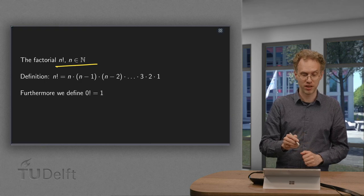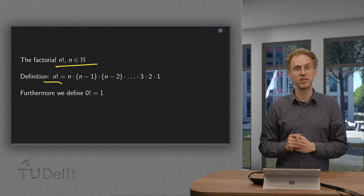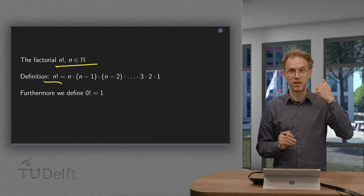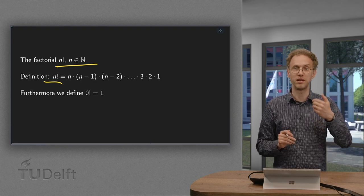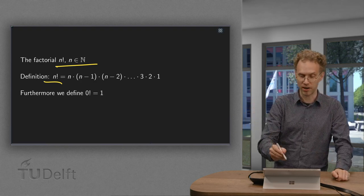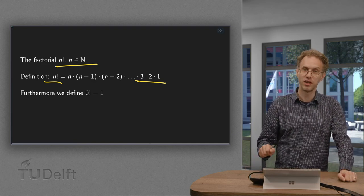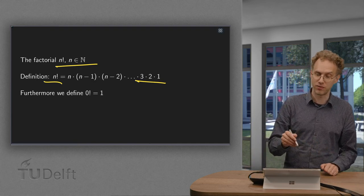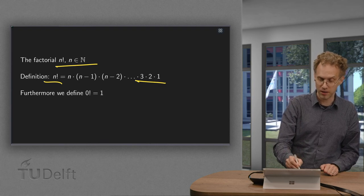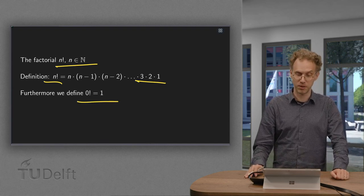For natural numbers n factorial, how to compute it? You have n times n minus 1 times n minus 2 times n minus 3 and so on, until you are at 3 times 2 times 1. So that's for natural numbers, and for convenience we also define 0 factorial to be 1.